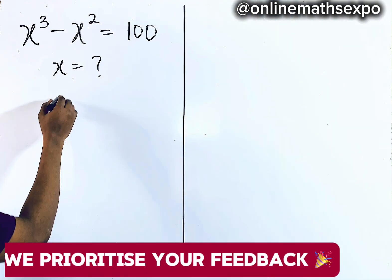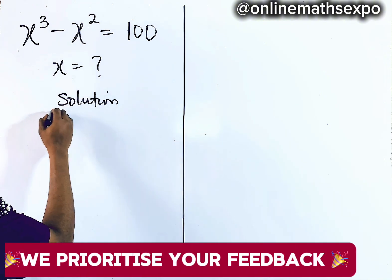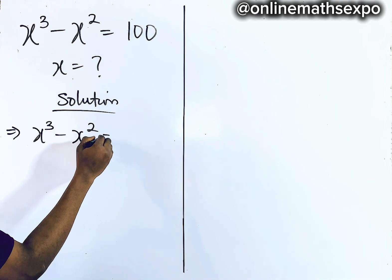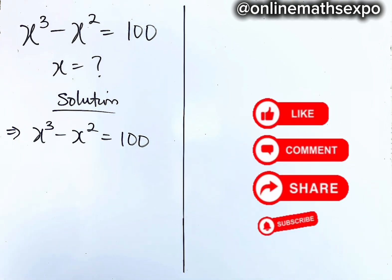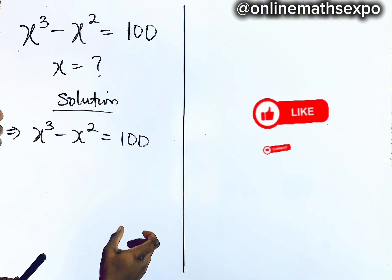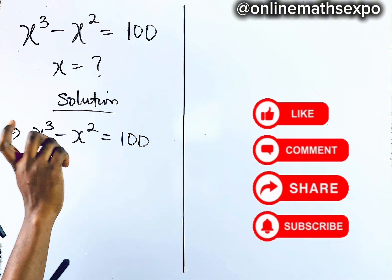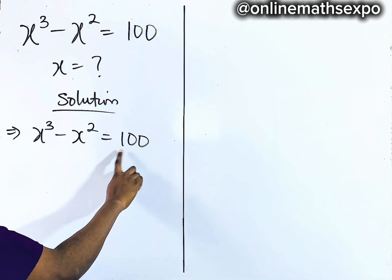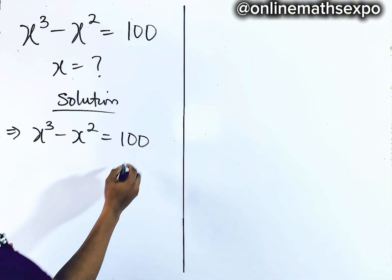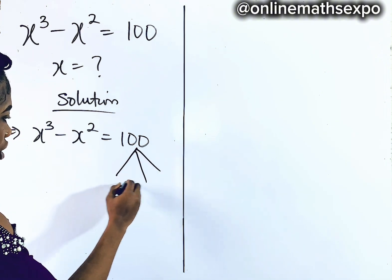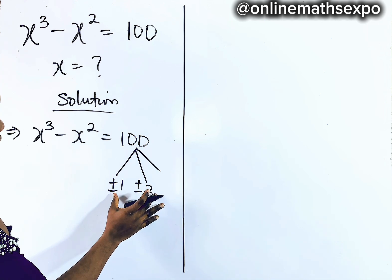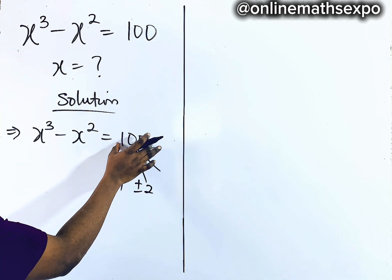Let's begin with the solution. The question is: is there a possibility of having a perfect cube and a square that we can subtract to give us 100? Let's look at plus or minus 1, plus or minus 2 — the factors or numbers that can divide 100.